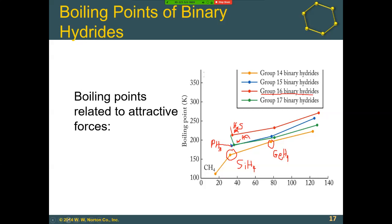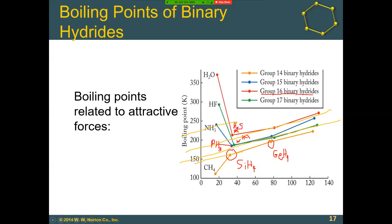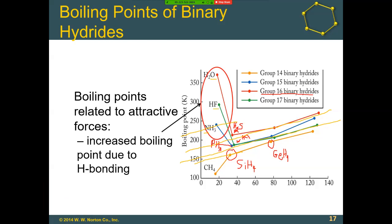If we take a look at the trends so far, mostly going in one direction, we would maybe expect water, ammonia, and HF to be somewhere in that range. In reality, where they are is much, much higher. You may recall from when we talked about intermolecular forces in biology that the reason is because these molecules have hydrogens attached to oxygen, fluorine, and nitrogen. That should be ringing a bell — the hydrogen bonding that can occur between these molecules.